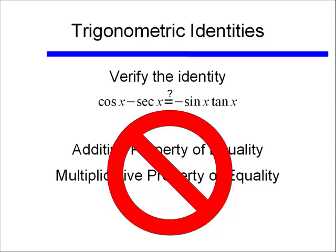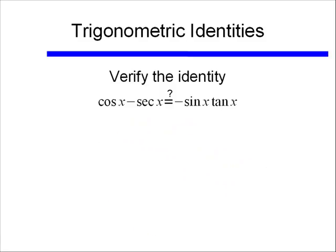Why? Well because we don't know if this is in fact equal. So you can't use these properties of equality unless you know that that equal sign is in fact valid. So what we'll need to do is look at each side of this equal sign, or we're not quite sure if this is an equal sign, separately.